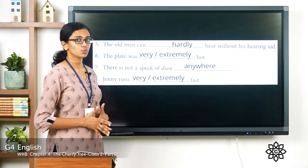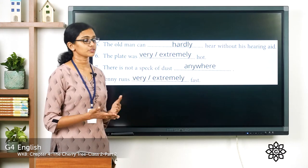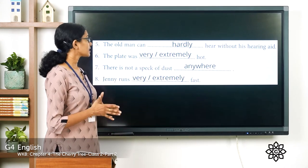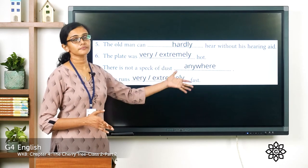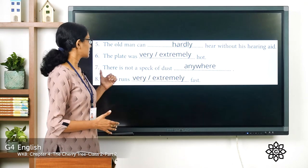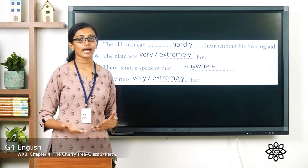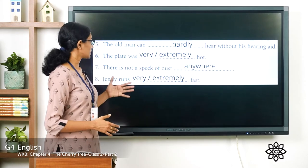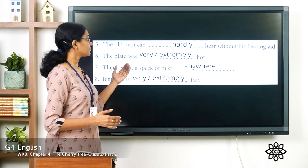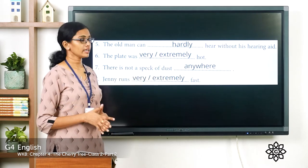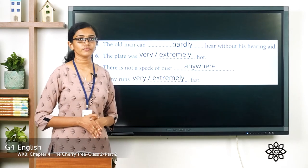Question seven: there is not a speck of dust anywhere — an adverb of place. Question eight: Jenny runs — you can write Jenny runs very fast or Jenny runs extremely fast — adverbs of degree. I hope you have done these questions correctly.